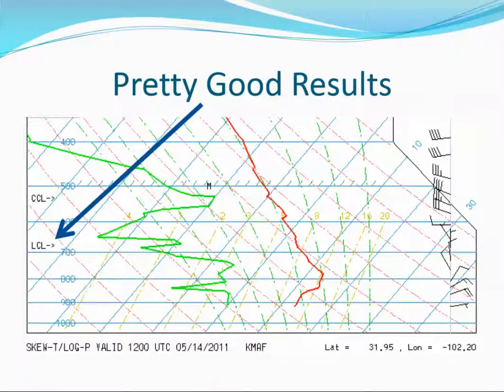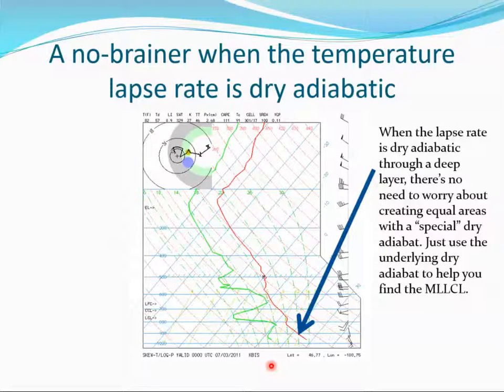You might get lucky sometimes if you have a sounding that already has a well-mixed boundary layer in the lowest 100 millibars. If that's the case, the environmental temperature profile is already dry adiabatic, and that will save you some work because the layer is already well-mixed. So we don't need to find a special dry adiabat to create equal areas in the lowest 100 millibars. You can just use the dry adiabat that underlies the environmental temperature profile to find the mixed layer LCL. You only have to worry about finding the mean layer mixing ratio in cases like this.